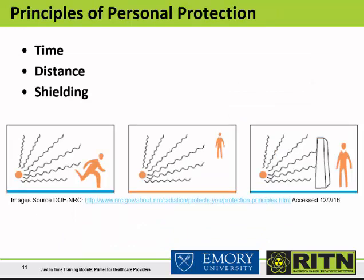Healthcare providers can limit their potential secondary radiation exposure and contamination by taking a few simple steps: minimize the time spent near a patient contaminated with radioactive material, maximize the distance from the source of contamination, use appropriate personal protective equipment, and monitor radiation dose with a dosimeter. When caring for a patient at an RITN center, standard precautions are sufficient — these include a protective gown, goggles, and a mask such as a surgical mask or an N95.